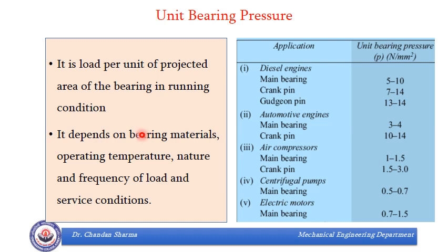The second important parameter is unit bearing pressure. Pressure is given by load over area, which is the projected area of the bearing: length times diameter. This depends on bearing materials, operating temperature, nature and frequency of load, and service conditions. In our problems, load is generally given to us. If we assume an L/D value, we can find the pressure and check whether it is within permissible limits using the table provided in the data book. For example, for a centrifugal pump, pressure should be in the range of 0.5 to 0.7 MPa.